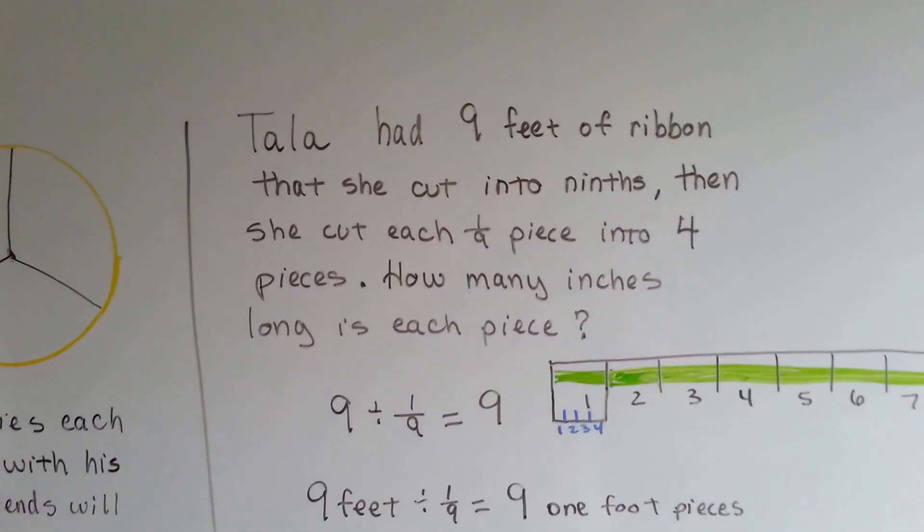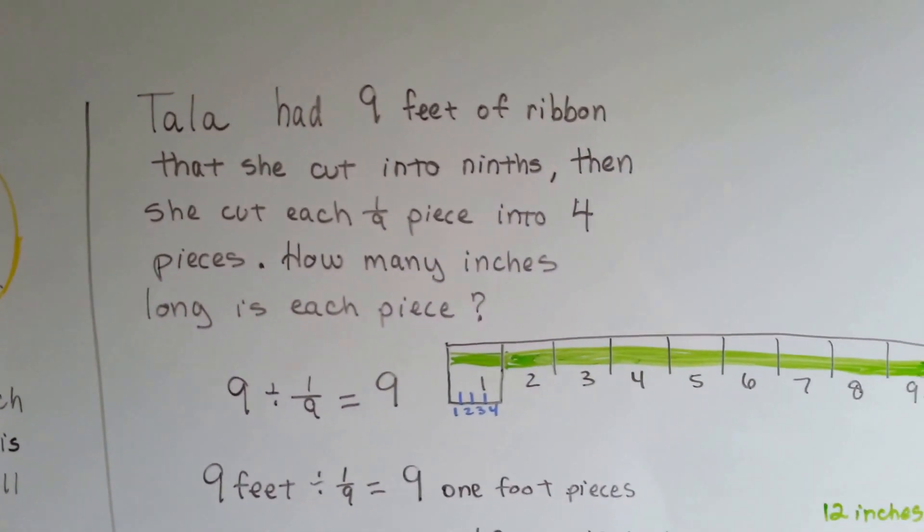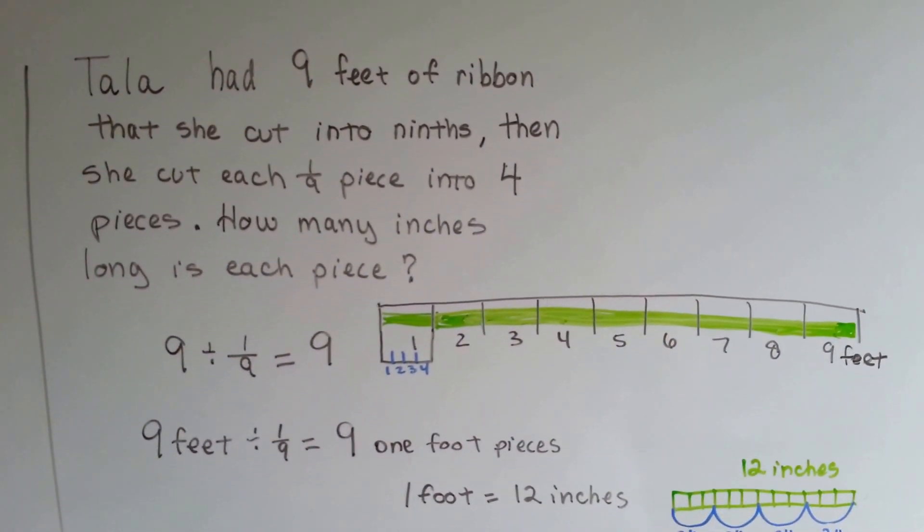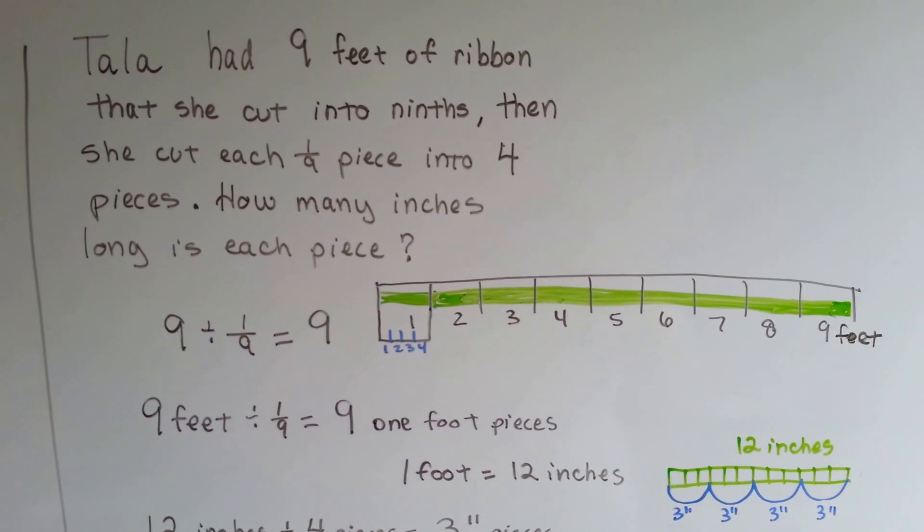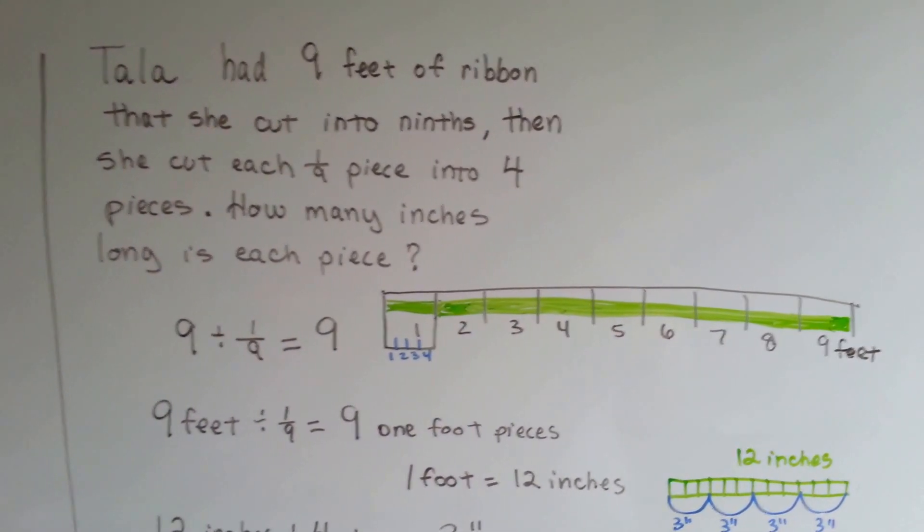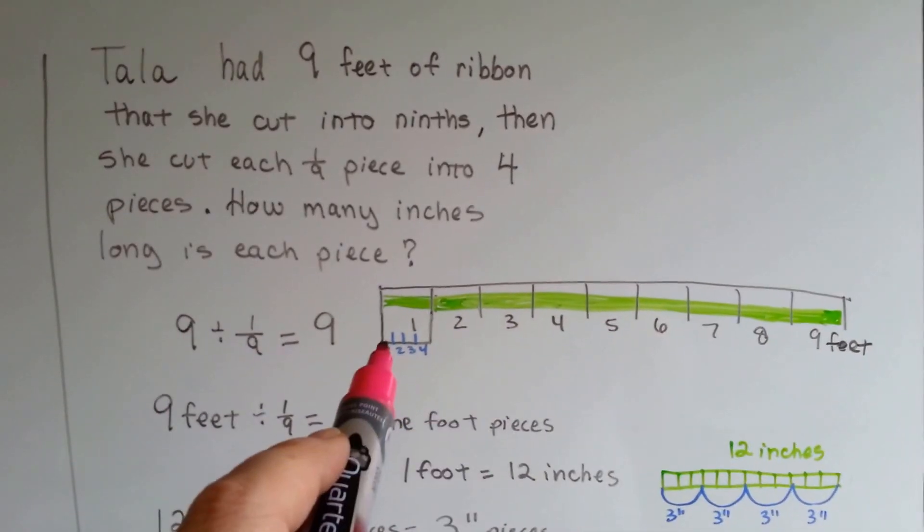Tala had nine feet of ribbon that she cut into ninths. Then she cut each one ninth piece into four pieces. How many inches long is each piece? This is so much easier than it sounds. By doing the drawing, it's going to be really simple.